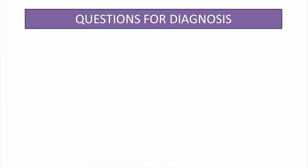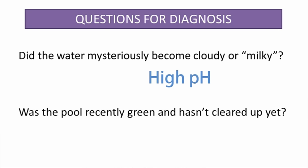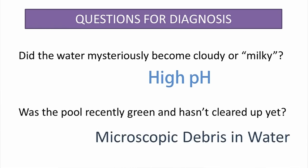I've got two quick questions for you for diagnosis that you can answer on your own. Number one, did the pool mysteriously become cloudy or milky? Did you just wake up one morning and the pool was cloudy — everything was going good the day before and it just turned cloudy? Chances are you probably got a high pH. The second question is, was the pool recently green or did it have algae in it and it hasn't quite cleared up yet? This is another main reason for cloudiness and a lot of times this is going to mean that you've got microscopic debris in the water.